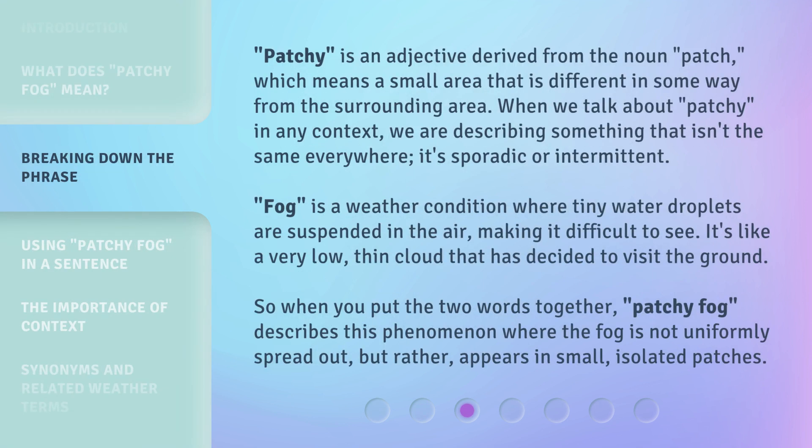Patchy is an adjective derived from the noun patch, which means a small area that is different in some way from the surrounding area. When we talk about patchy in any context, we are describing something that isn't the same everywhere — it's sporadic or intermittent. Fog is a weather condition where tiny water droplets are suspended in the air, making it difficult to see. It's like a very low, thin cloud that has decided to visit the ground.